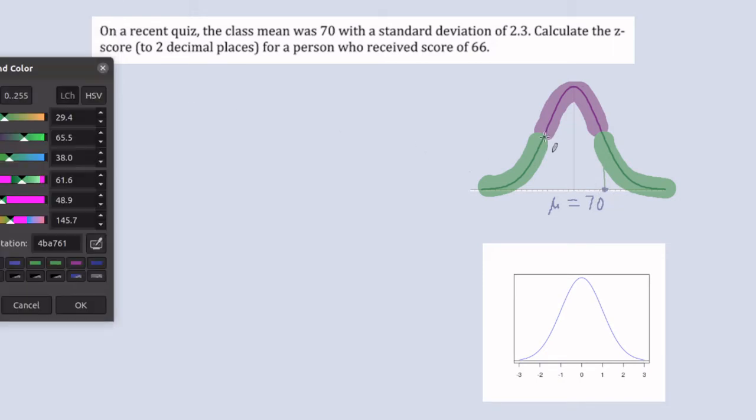And of course this point right here is going to be 70 minus 2.3. So in the case that this was normally distributed then the mean would be here in the middle.